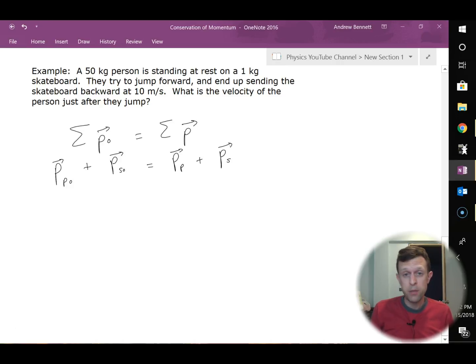And then every momentum term I can replace with the equation for momentum, which is just mass times velocity. So in here, for momentum of the person, I'll do the mass of the person times the initial velocity of the person, plus the mass of the skateboard times the initial velocity of the skateboard, equals mass of the person times the final velocity for the person, plus the mass of the skateboard times the final velocity for the skateboard.